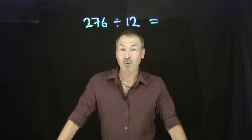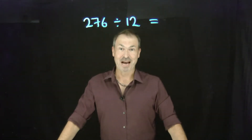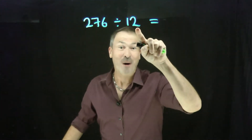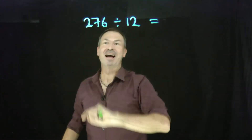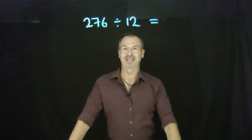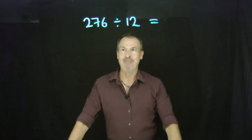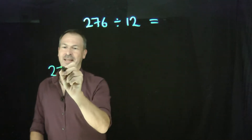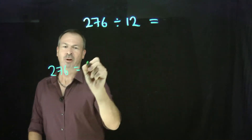Okay, let's do some multi-digit division now. What got 12-folded to give the answer 276? Alright, so let's draw the answer. 276 will look like this.